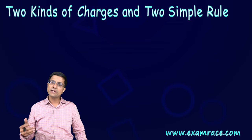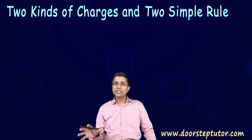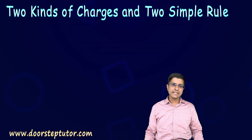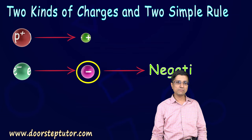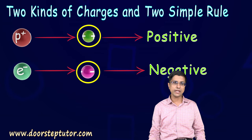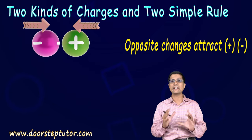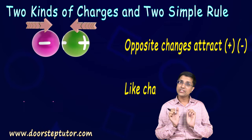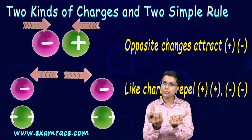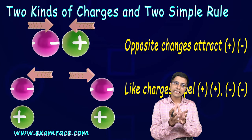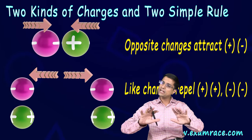Before we move on to understanding more about static electricity, we need to understand some basic properties of these charges. Electrons and protons have different kinds of charges — we call one negative and the other positive. Whenever we bring a positive and a negative charge together, they attract. If we bring like charges together — positive-positive or negative-negative — they always repel. You have to put some force to keep them together.